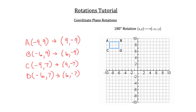Now that we've rotated each point, let's plot them. A is at 9, negative 9 — 9 to the right and 9 down. B is at 6, negative 9 — 6 to the right and 9 down. C is at 9, negative 7 — 9 to the right and 7 down. And D is at 6, negative 7 — 6 to the right and 7 down. We'll connect those points to see figure ABCD prime. And that's how you rotate a figure 180 degrees in geometry. That's all there is to rotations in geometry.